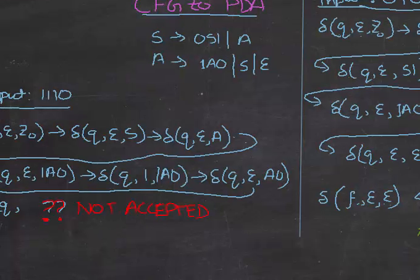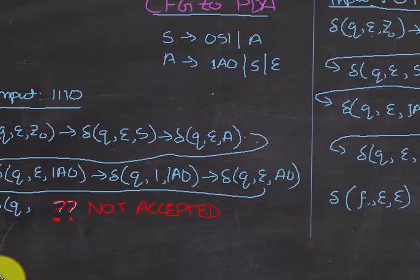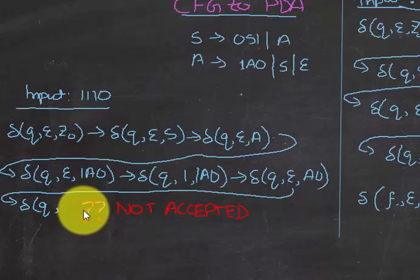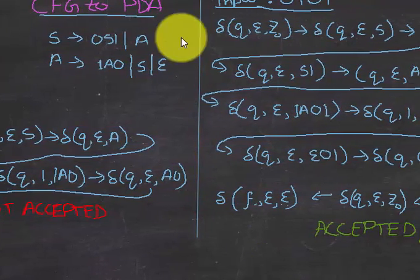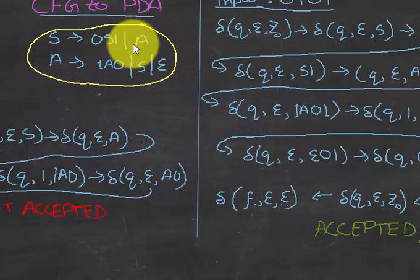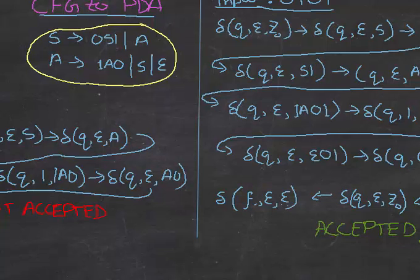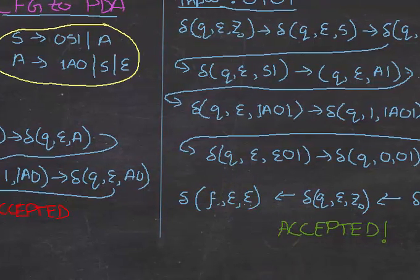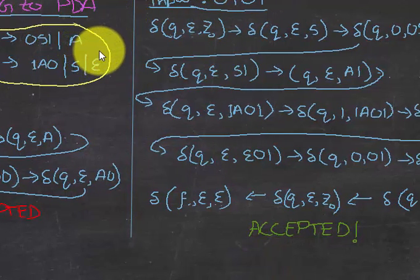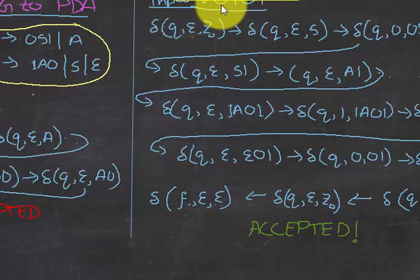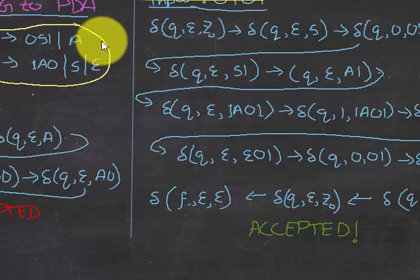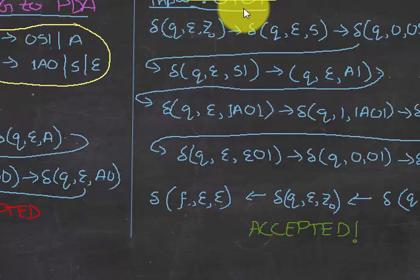Now I'll show how you would test if a context-free grammar is accepted with the help of the PDA. For example, given this context-free grammar and its state diagram, the question asks whether the input 0, 1, 0, 1 is accepted. You could test this using the context-free grammar by deriving it — by replacing S with the symbols required to produce that input.